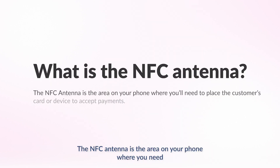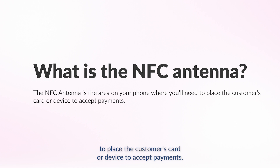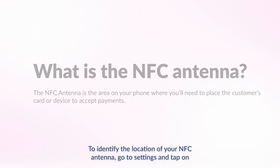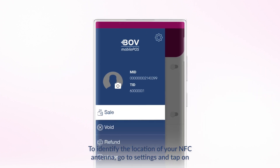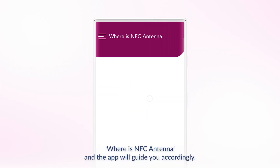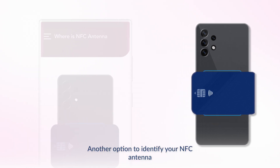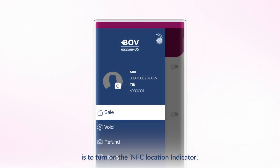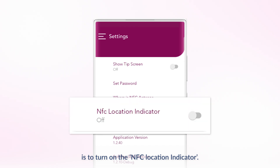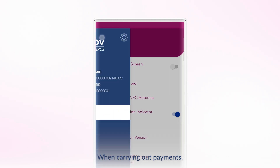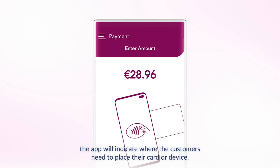The NFC antenna is the area on your phone where you'll need to place the customer's card or device to accept payments. To identify the location of your NFC antenna, go to Settings and tap on Where is NFC antenna, and the app will guide you accordingly. Another option is to turn on the NFC location indicator — when carrying out payments, the app will indicate where the customer needs to place their card or device.